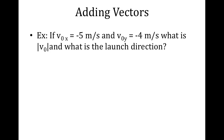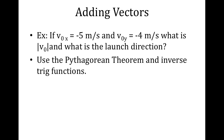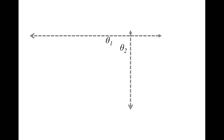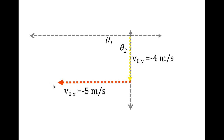Here's an example: initial velocity in x is negative 5 m/s, initial velocity in y is negative 4 m/s. What is the initial speed and direction? Draw out the vectors — x is negative so it goes left, y is negative so it goes down. Use the Pythagorean theorem to find the hypotenuse, which connects where you started to where you ended up. That gives us 6.4 meters per second.